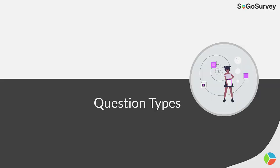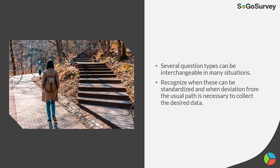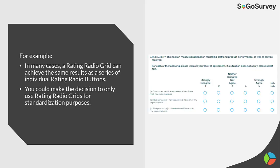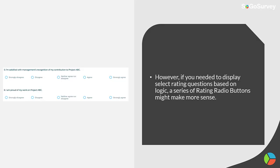Question Types. Several question types can be interchangeable in many situations. Recognize when these can be standardized and when deviation from the usual path is necessary to collect the desired data. For example, in many cases a rating radio grid can achieve the same results as a series of individual rating radio buttons. You could also make the decision to only use rating radio grids for standardization purposes. However, if you needed to display select rating questions based on logic, a series of rating radio buttons might make more sense.